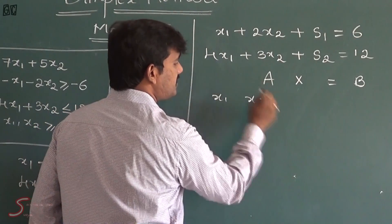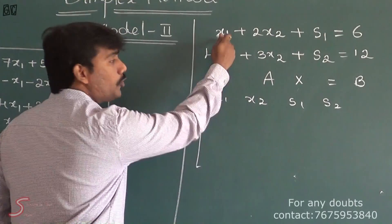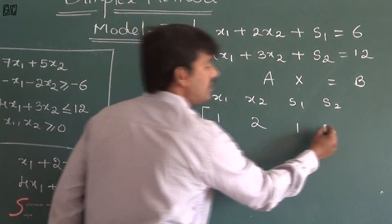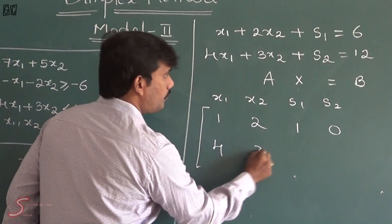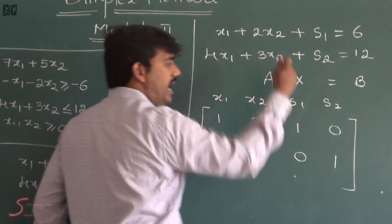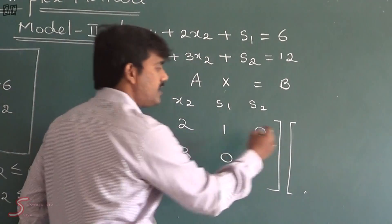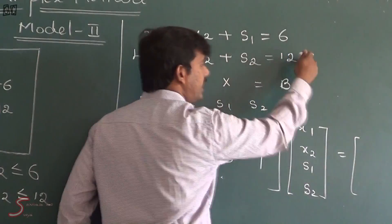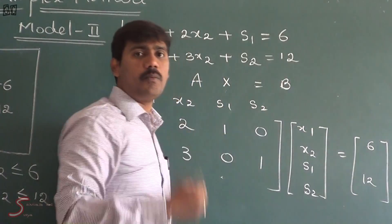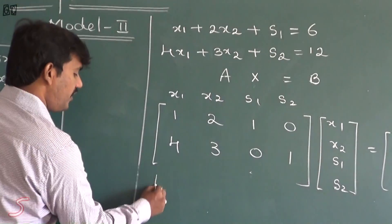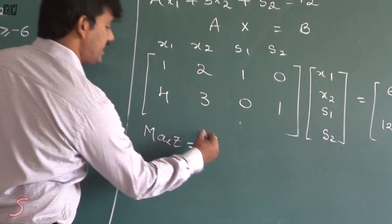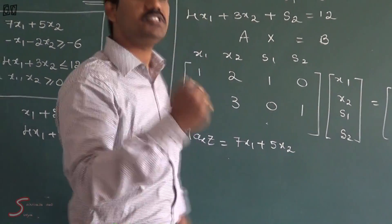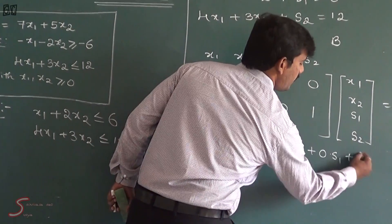Simply, I am going to represent all the variables: x1, x2, s1, s2. The coefficient of x1 is 1, the coefficient of x2 is 2, s1 is 1, and s2 is 0. The coefficient of x1 is 4, x2 is 3, s1 is 0, and s2 is 1. This is all about matrix A. The x variables column is x1, x2, s1, s2. And b equals 6 and 12. This is the standard form of the matrix. After this, the modified objective function: the given objective function is max z equal to 7x1 plus 5x2. We introduce two slack variables whose costs are 0. So the modified objective function is max z equal to 7x1 plus 5x2 plus 0·s1 plus 0·s2.